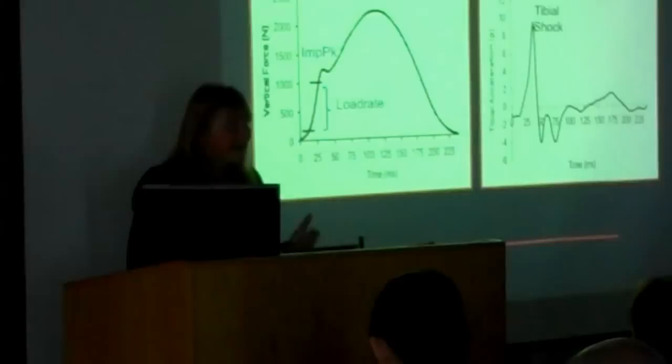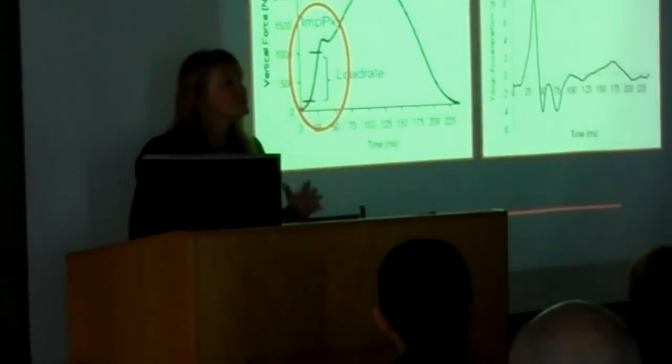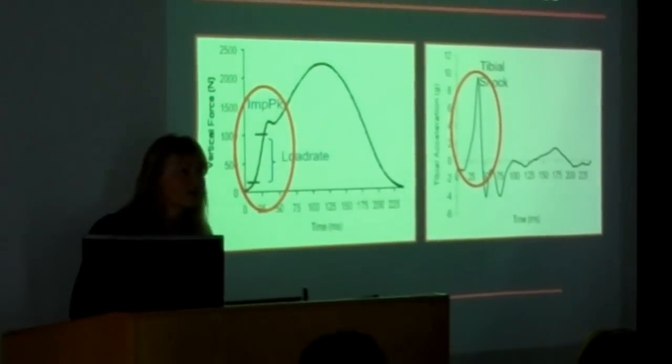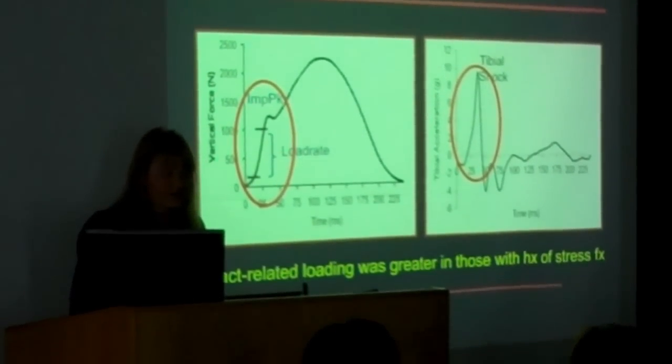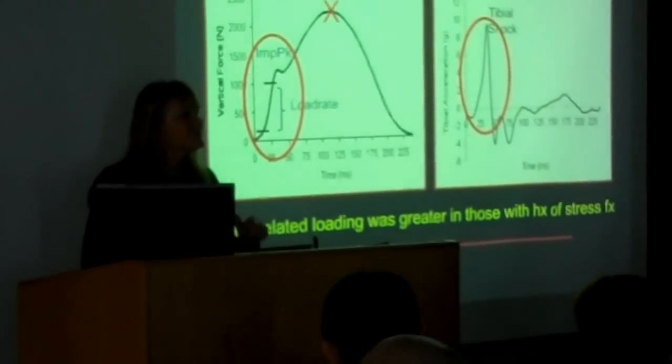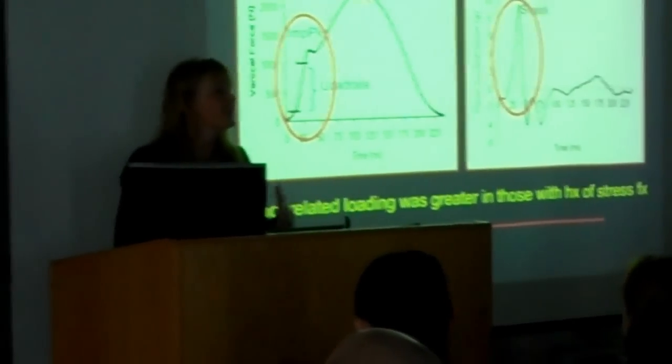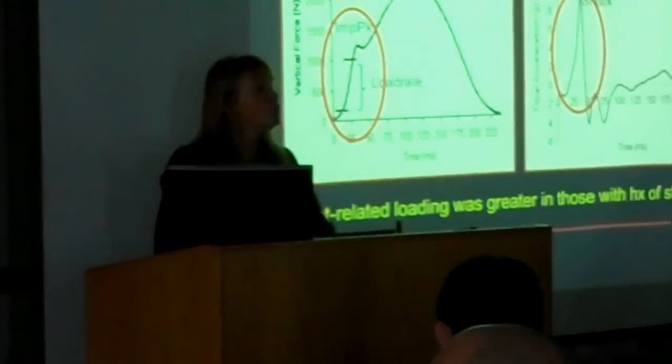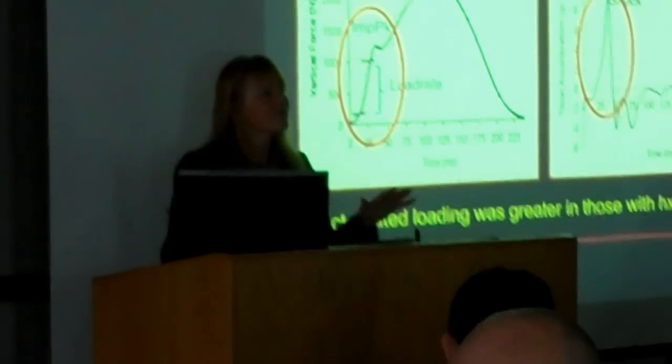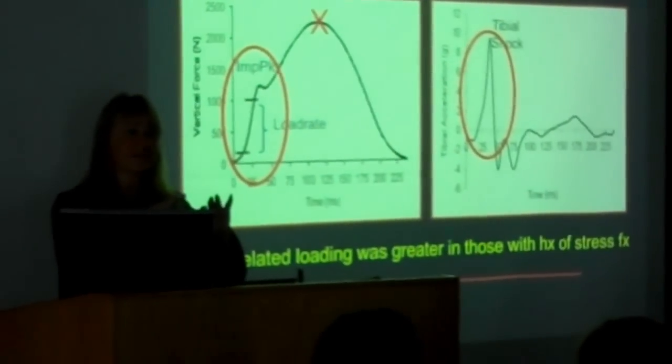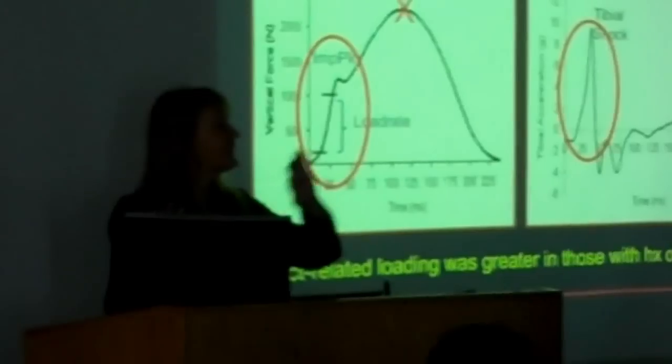So what we found in looking at these individuals who had a history of stress fractures is that they indeed had higher impact peaks, higher load rates, higher tibial shock. And what was really interesting is that the peak vertical ground reaction force, which is actually two to three times what the impact peak is, was not different. In all of our subsequent studies, the peak force, which is the highest force the body experiences, has never differentiated those who've been injured and those who have not, whether retrospectively or prospectively in our studies.